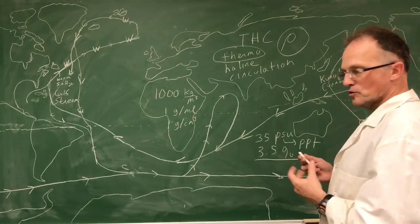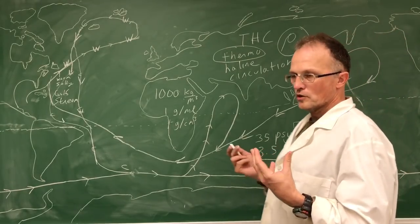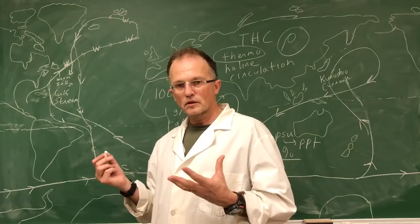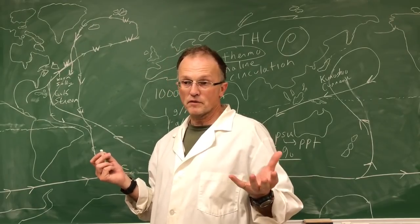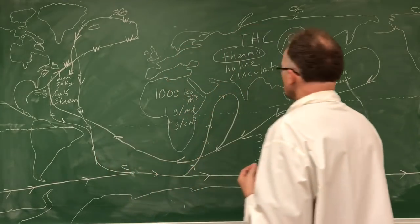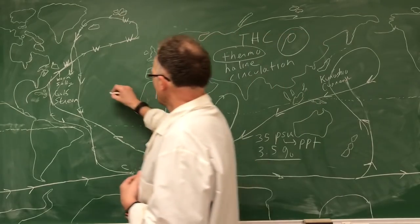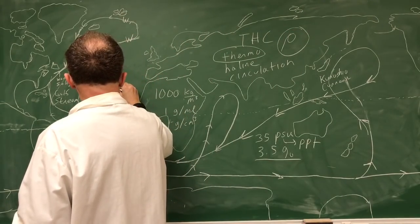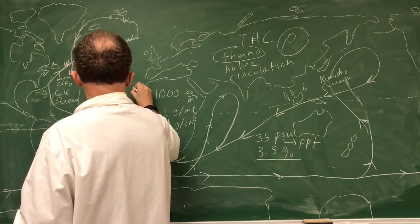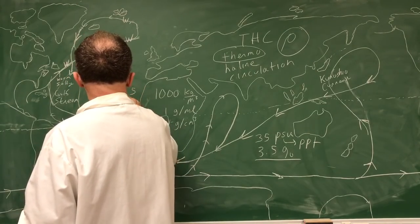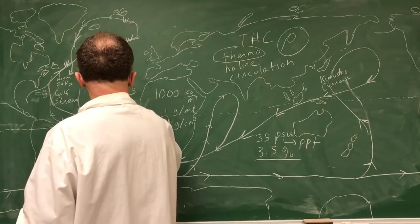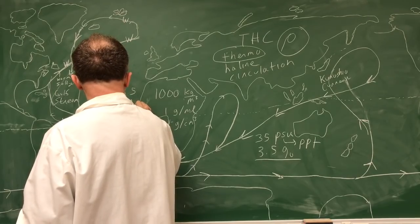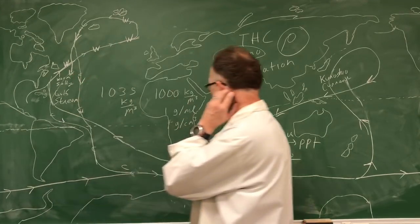So this makes the water heavier because you're replacing water molecules with salt, dissolved salt, which is heavier. Salt's heavier than water. So that gives you a number of about 1,035 kilograms per cubic meter for salt water.